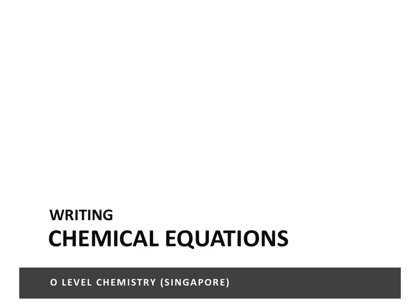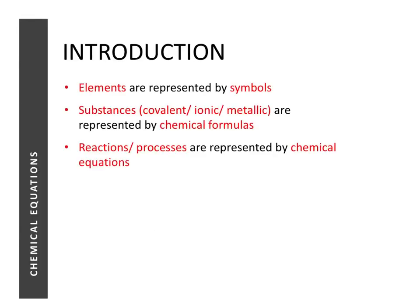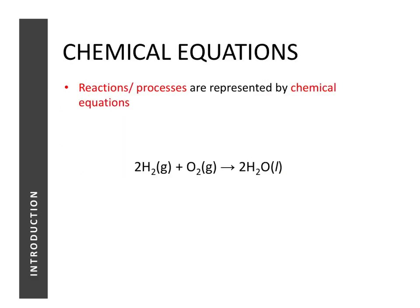In this lesson we're going to learn about chemical equations. Previously we learned that elements are represented by symbols found in the periodic table, and that different substances — covalent, ionic, or metallic — are represented by chemical formulas. In this lesson, we will learn what chemical equations are. Chemical equations are essentially used to represent chemical reactions or chemical processes.